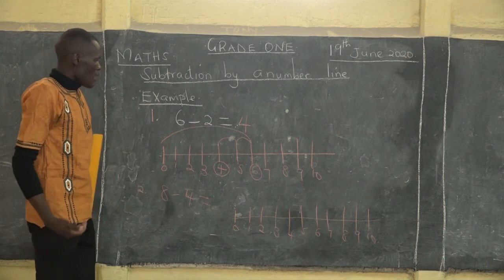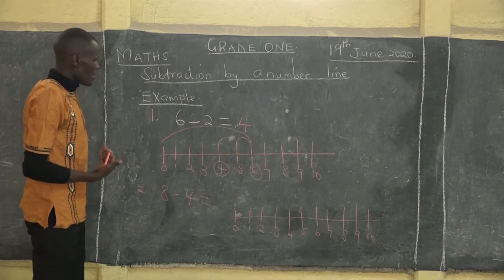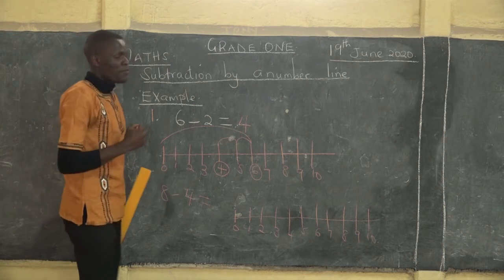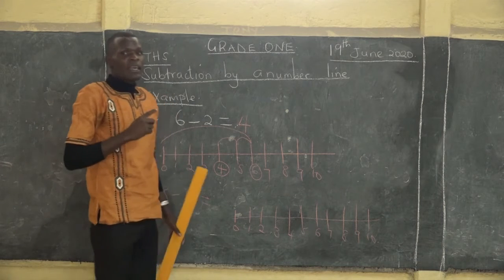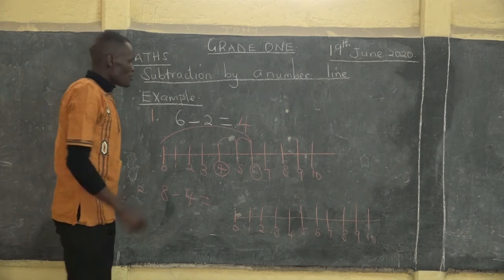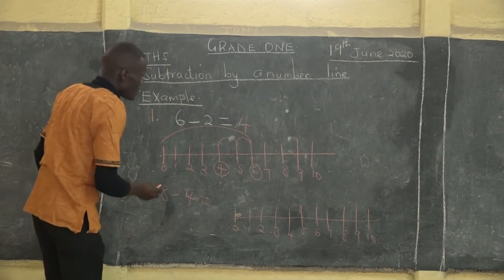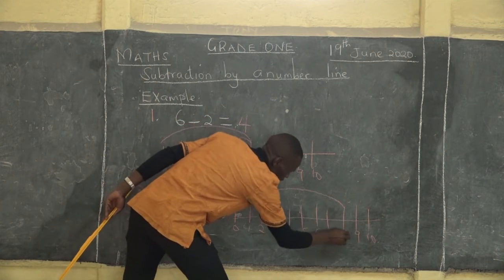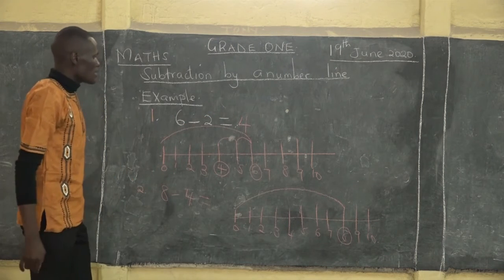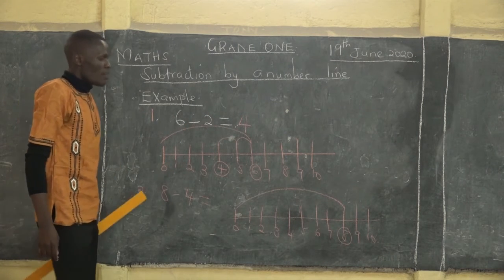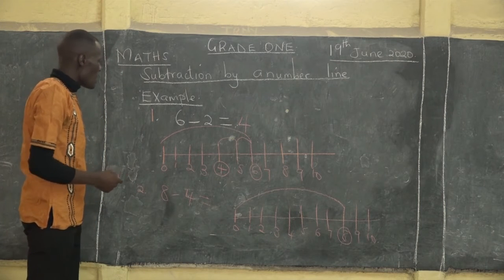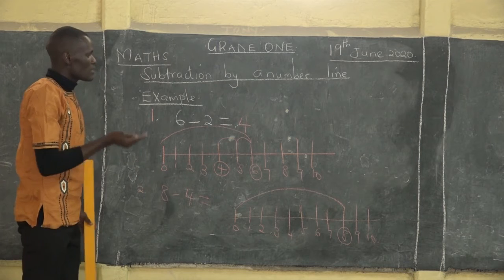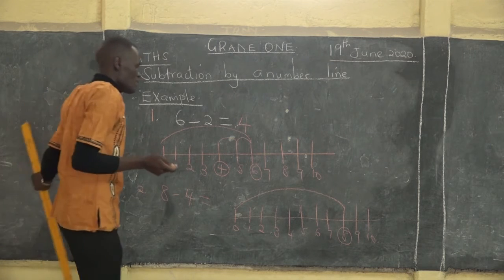Now we have our number line and we are working out eight take away four. From zero, where is eight on our number line? Our number eight is here — we can circle it on our number line. Now we are taking away four, and that four that we are taking away is the number of times that we shall jump towards the left.